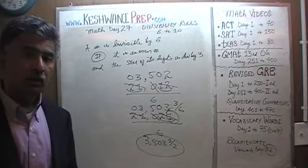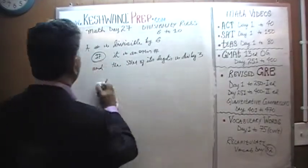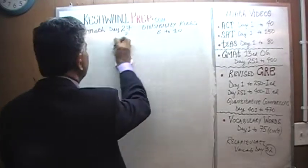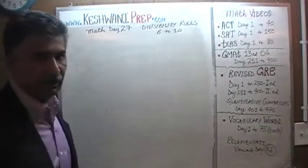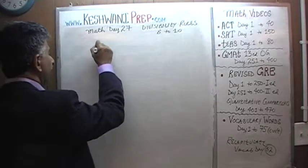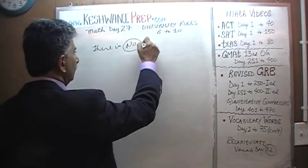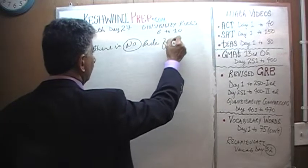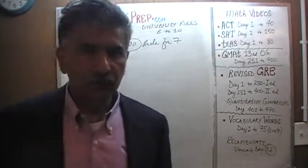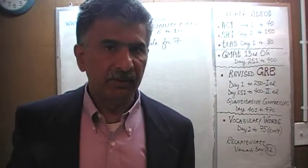Let's move on. How do we know if a number is divisible by 7? Well, I have some bad news: there is no rule for 7. There is no rule for 7 — you simply have to do it out and determine whether or not a number is divisible by 7.